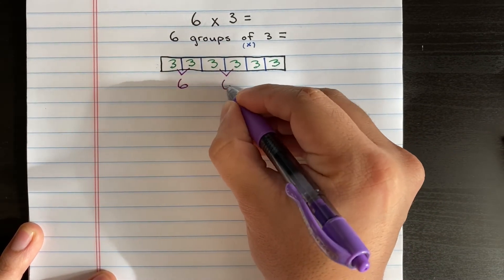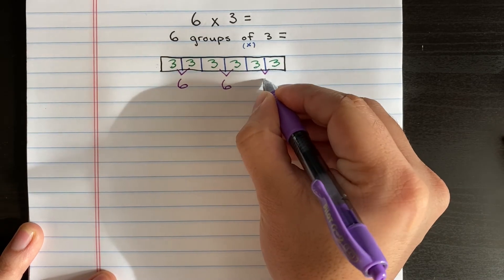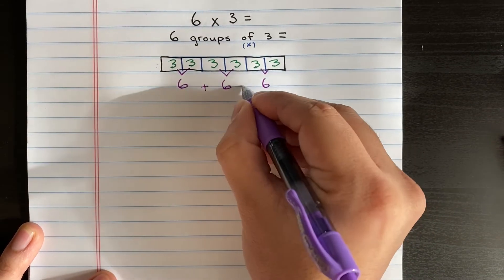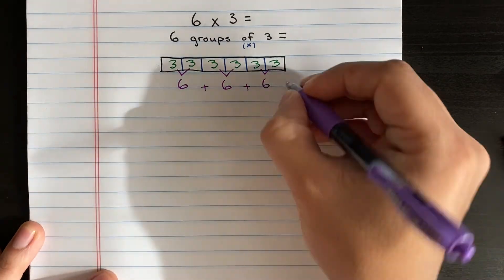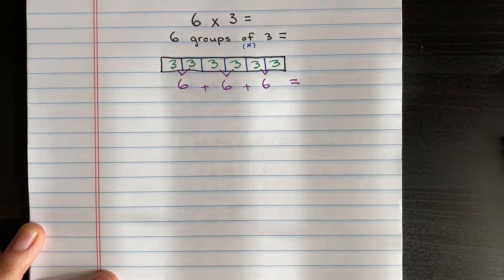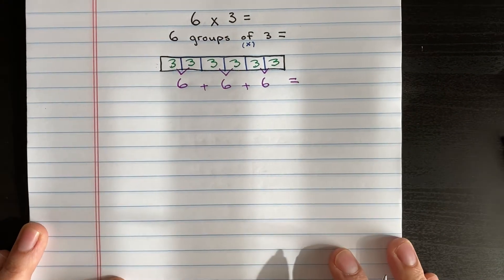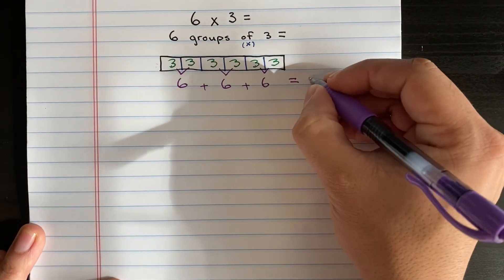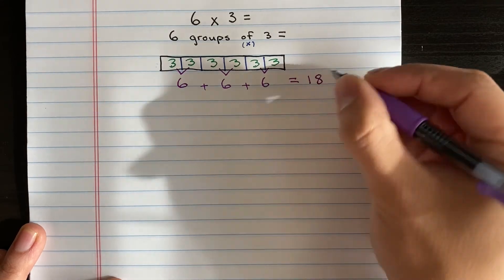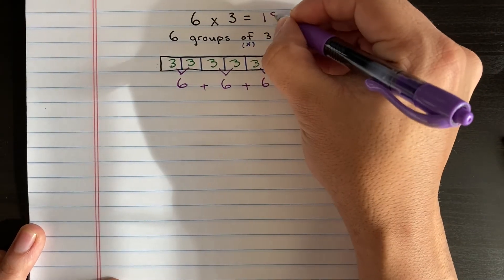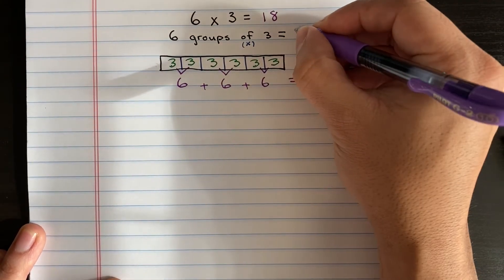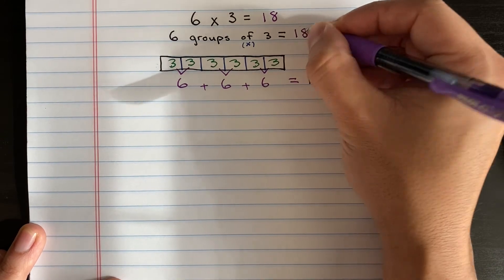So now it's like we have 6 + 6 + 6, and you could do your repeated addition sentence: 6 + 6 + 6. 6 + 6 is 12, another six is 18. So 6 × 3 is 18, or six groups of three equals 18. Boom!